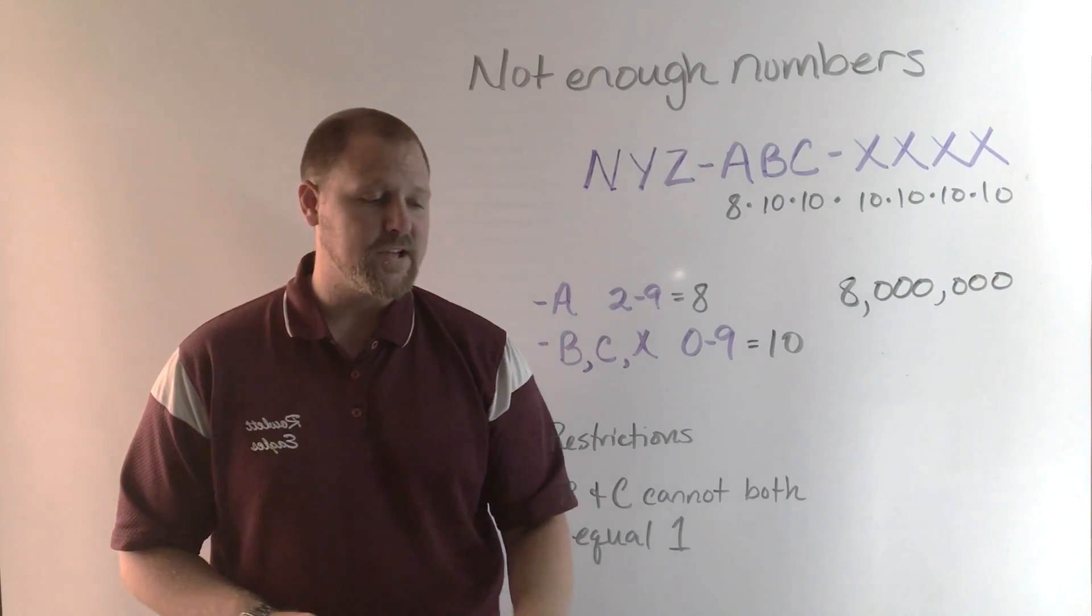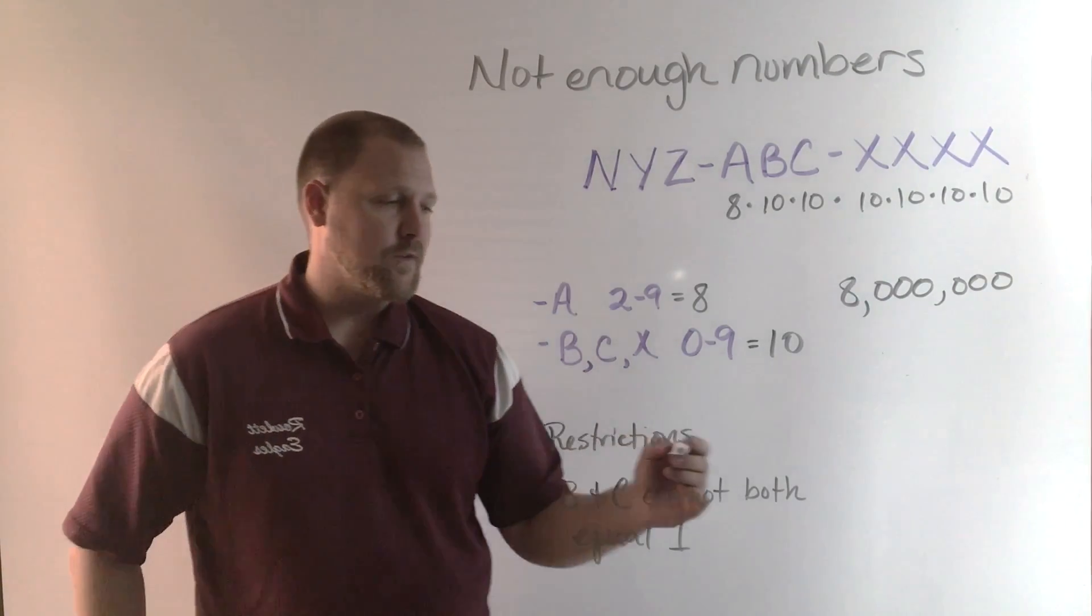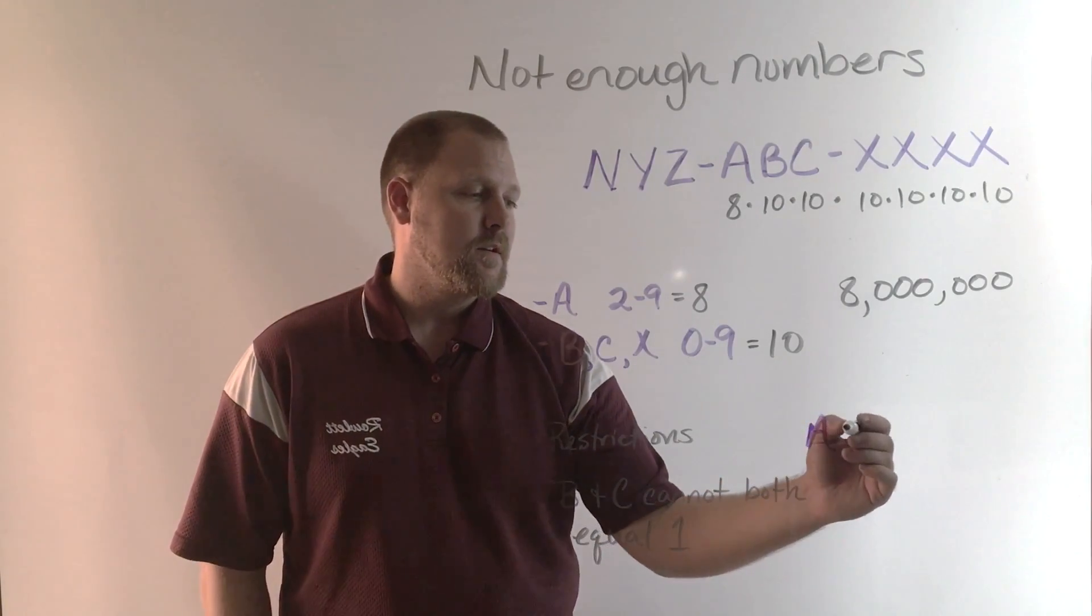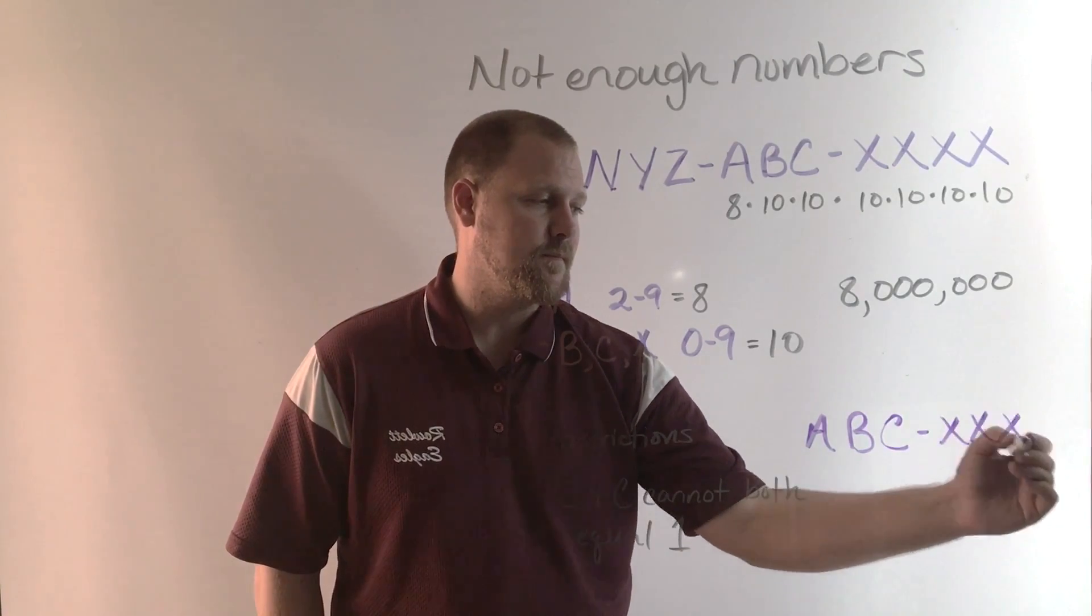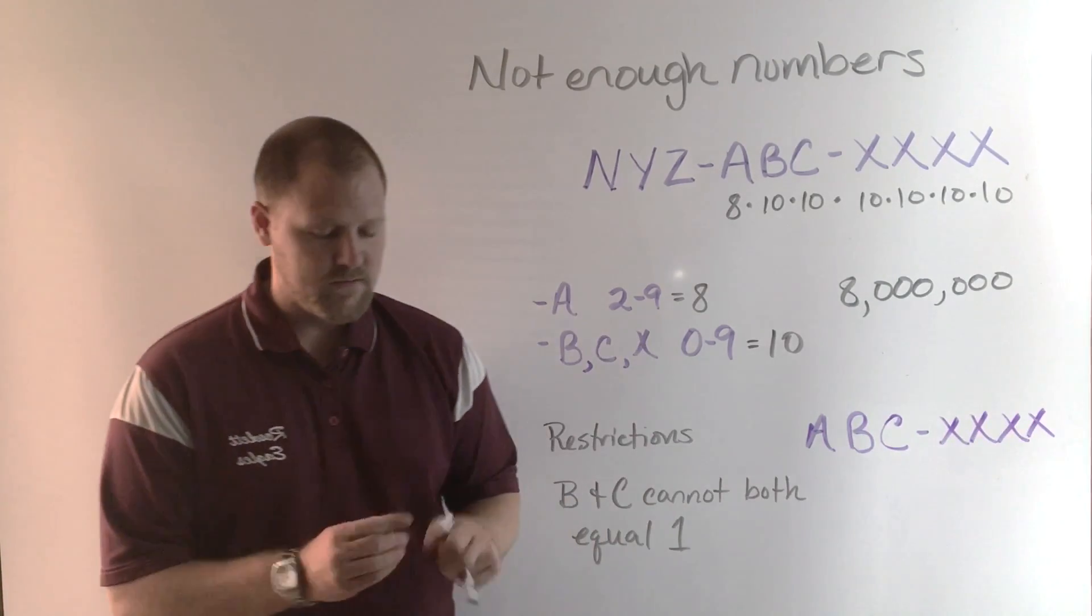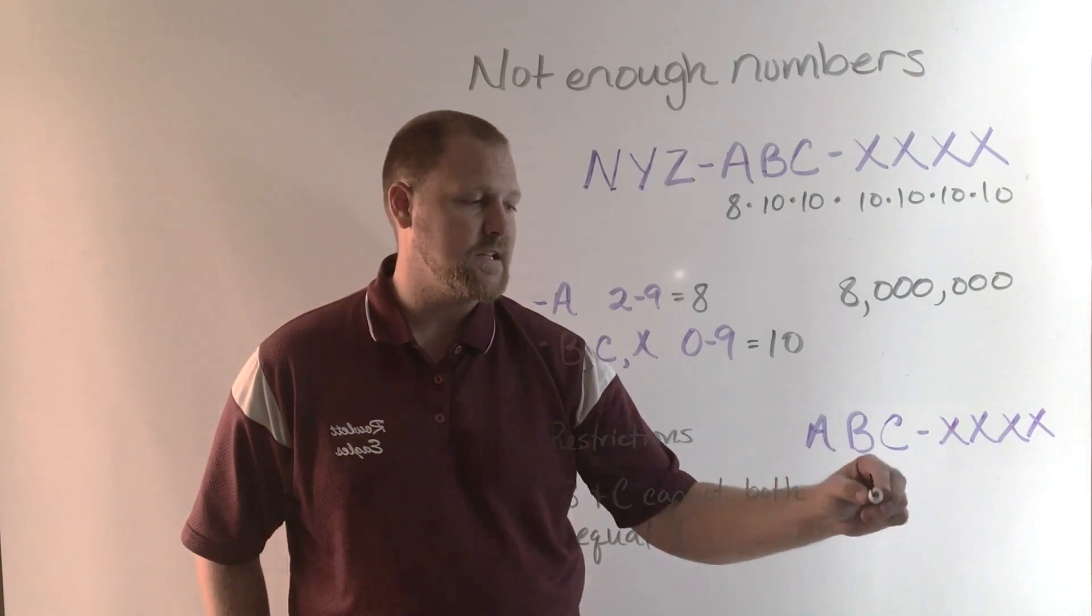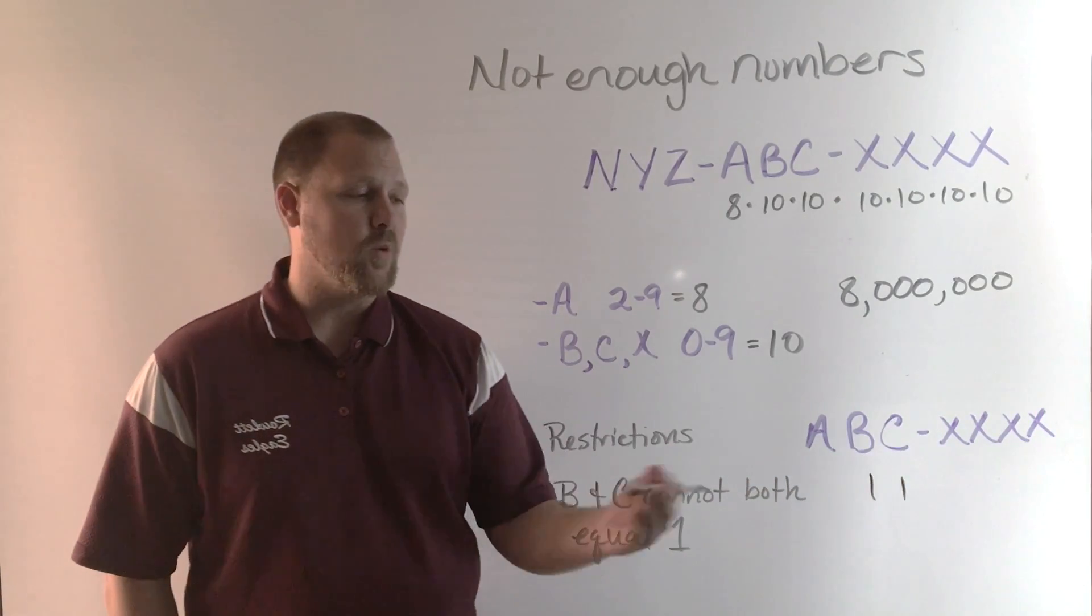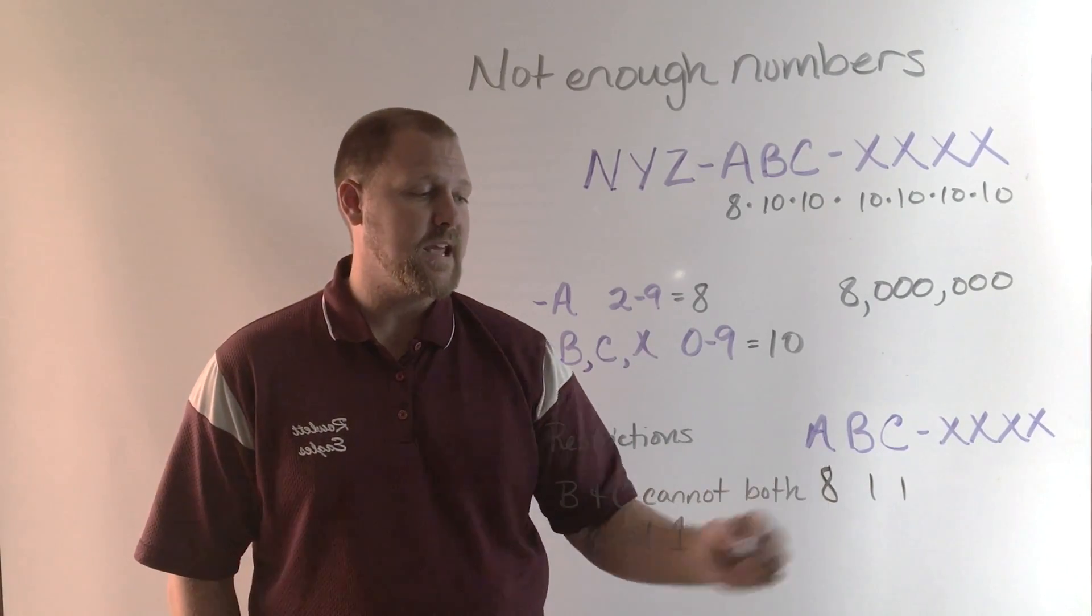Then we have to look at our restrictions. B and C cannot both be equal to one. If we take our 7-digit number, and now the only restriction here is that B and C are both equal to one, A can still be 2 to 9, so that's eight digits.